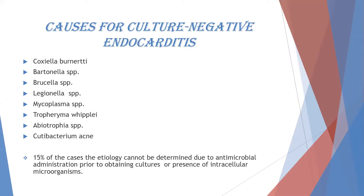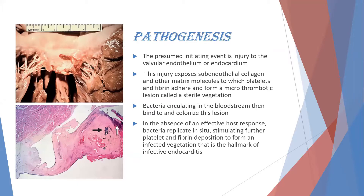Regarding pathogenesis, the presumed initial event is valvular endothelium or endocardium disruption. This injury exposes subendothelial collagen and matrix molecules to which platelets and fibrin adhere, forming a sterile thrombotic lesion called sterile vegetation. Bacteria circulating in the blood then bind and colonize this sterile vegetation, and in the absence of effective host response, bacteria replicate in situ, stimulating further platelet and fibrin deposition to form the infected vegetation — the hallmark of infective endocarditis.